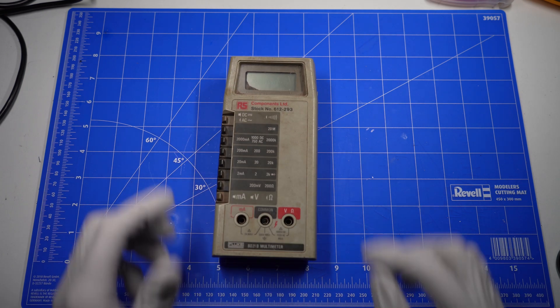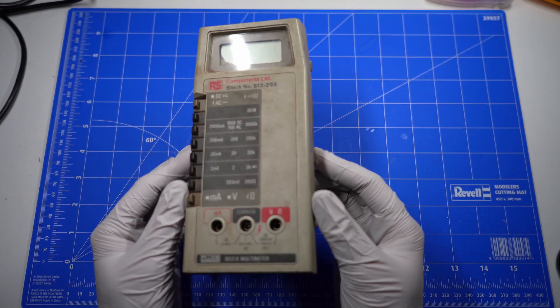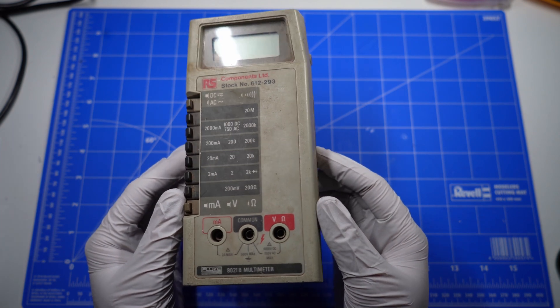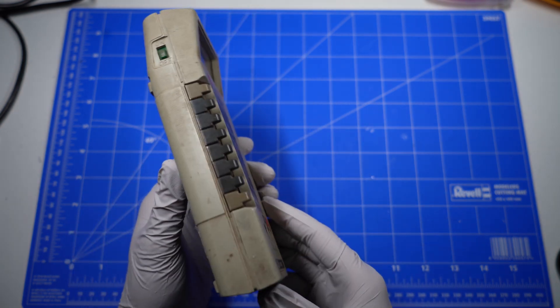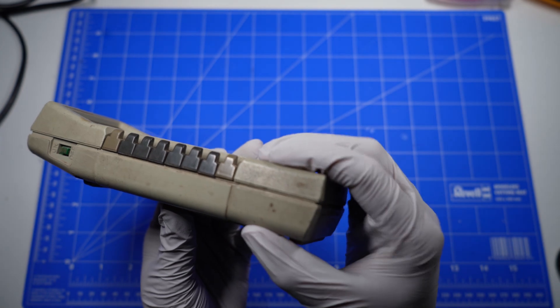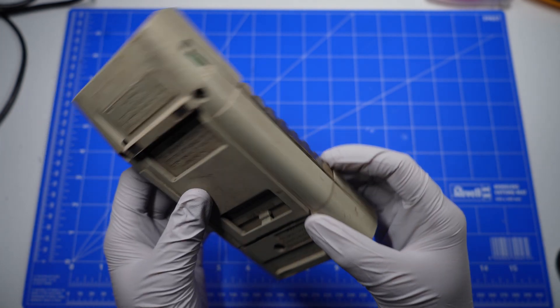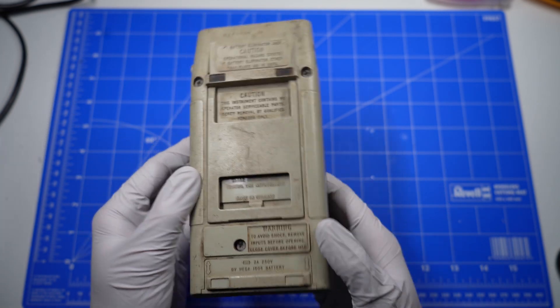Hi everyone, what I've got here is the Fluke 8021B. This multimeter came out in the late 70s or early 80s, I'm not too sure, and it definitely looks like it hasn't been cleaned since then.